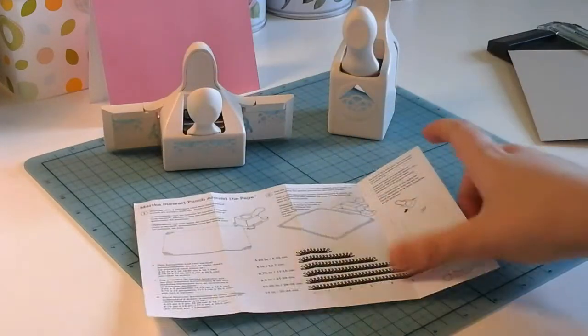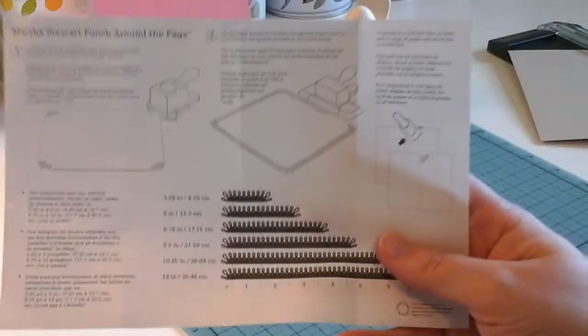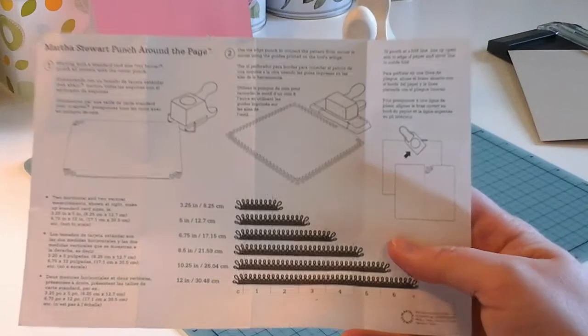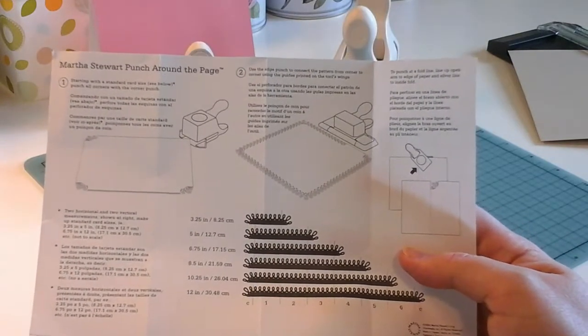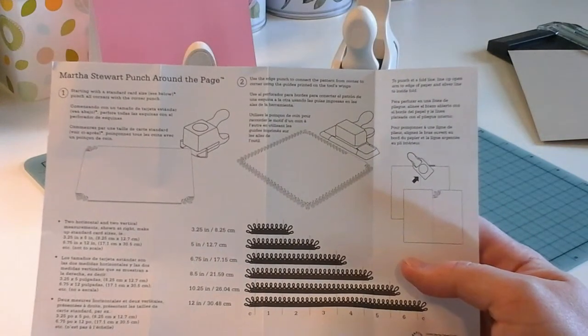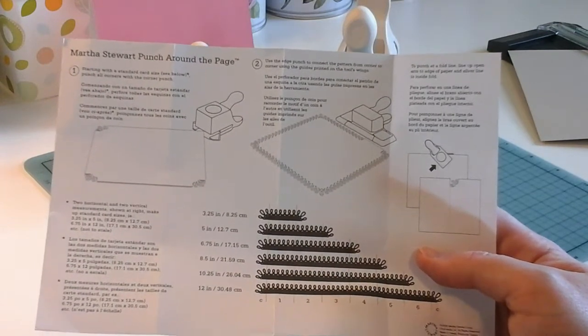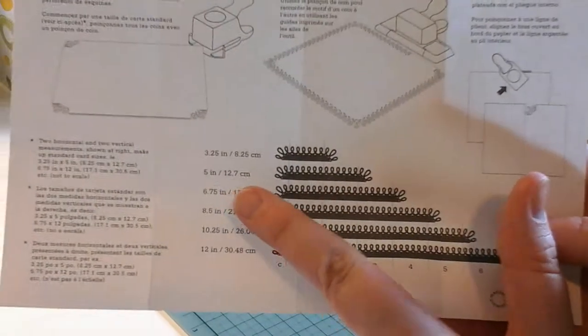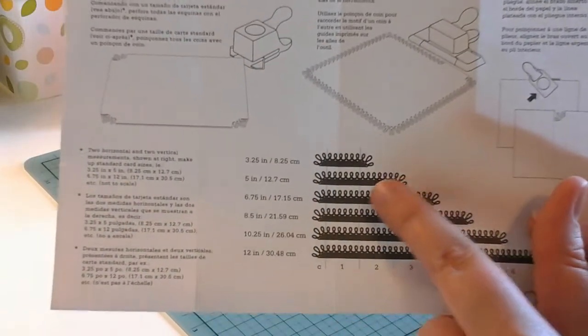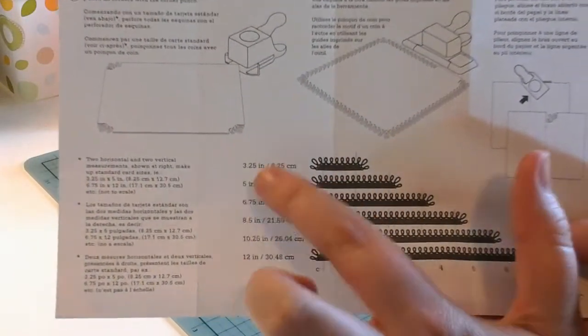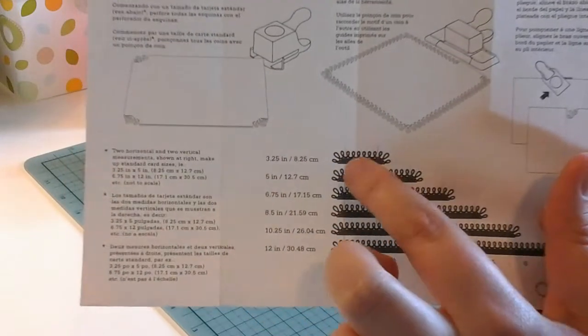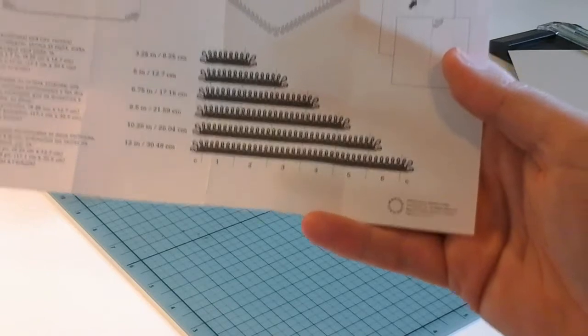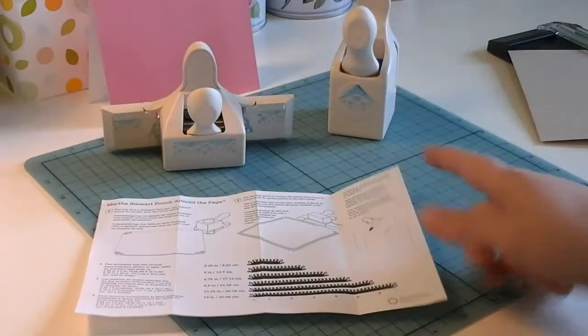It tells you on the paper what measurements you can do and how to do it. The piece of cardstock I cut down was 3.5 inches by 5 inches. It'll tell you that for the 5 inch you need two corner and two straight, and for the 3.5 inch, two corner and one straight. So it'll tell you all those sizes and how to have everything measured for your card.